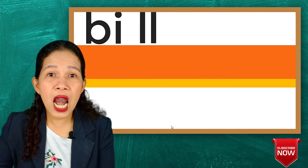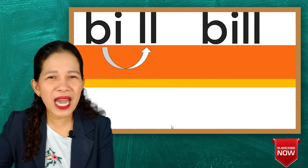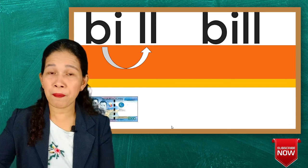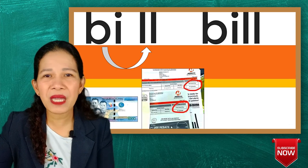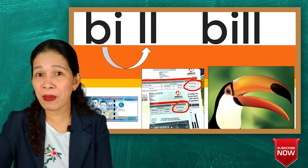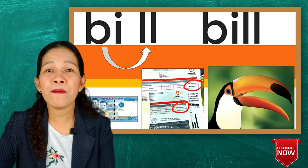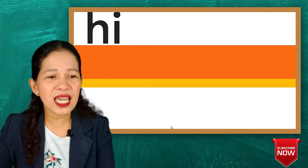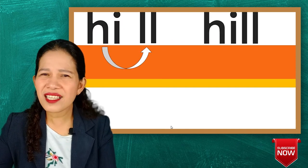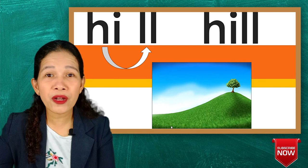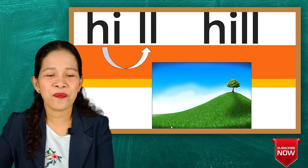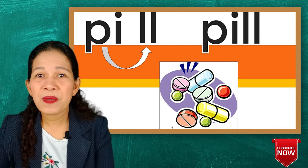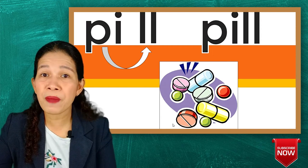Next is bi-ll, bill. We have many kinds of bills. A peso bill — money that is in paper form, we call it bill. Bill is also what we pay, like a Meralco bill. Another kind of bill is the beak or mouth of a bird. In this picture you would see a hornbill, a kind of bird with a very big bill. Next is hill — a hill is smaller than a mountain with a rounded top. Next is pill — pill is medicine. Here in our pictures we have many pills.